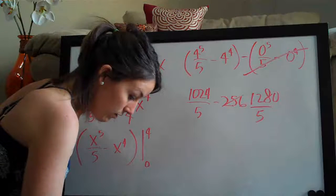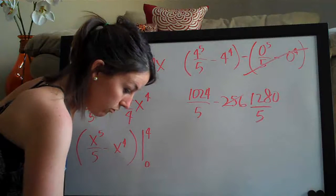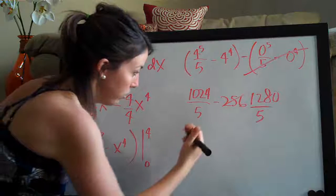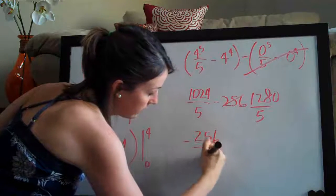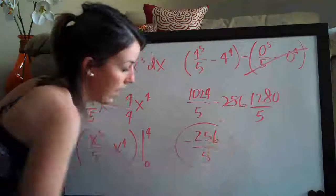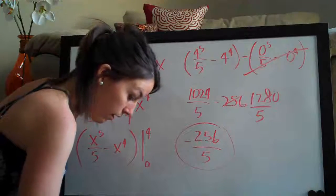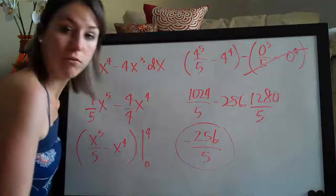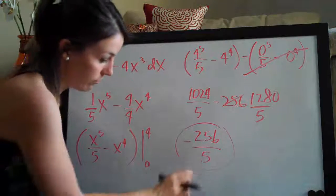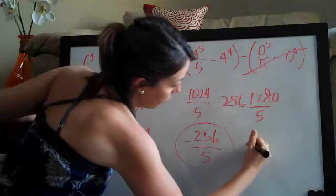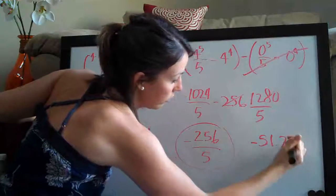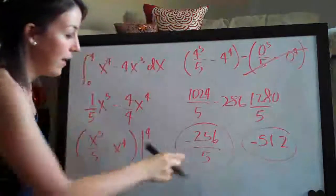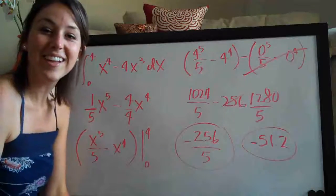So now I'm going to do 1024 minus 1280 which is negative 256. So my final answer is negative 256 over five or if you want to convert it to decimal which I wouldn't recommend because I think fractions are cleaner but the decimal would be negative 51.2. So either of those work and that's your final answer. Thanks guys. See you next time.